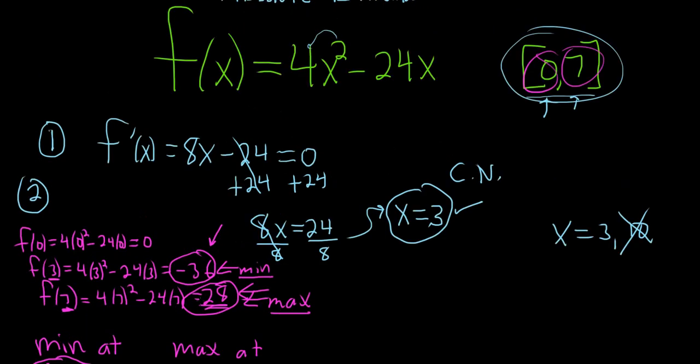So quick recap. You take the derivative, super easy in this problem, and just look at it, right? There's no division by zero. There's no funny square roots. It's never undefined. You set it equal to zero. You solve for your x. And then when you get here, you just got to make sure it's between zero and seven. So it is. So we're good.